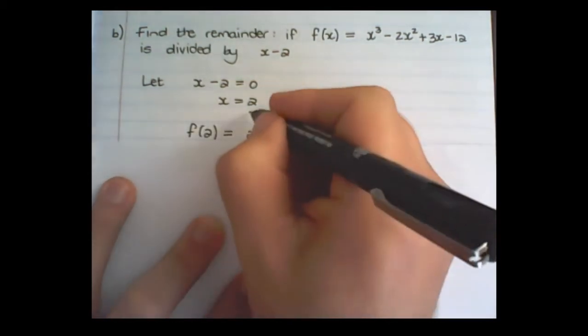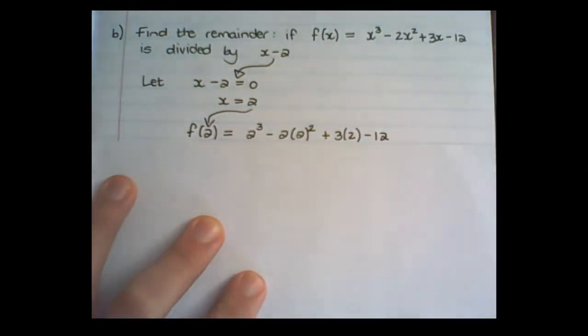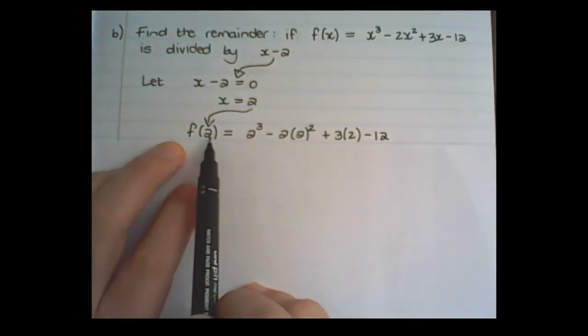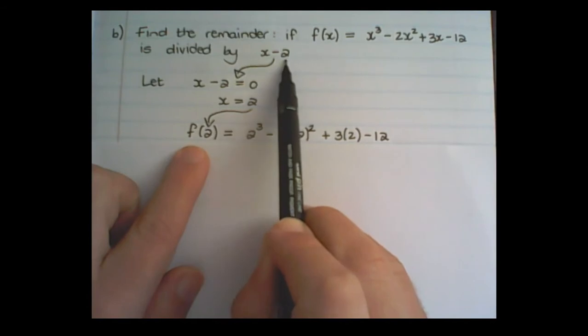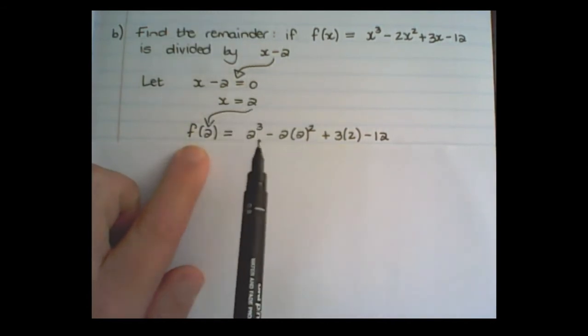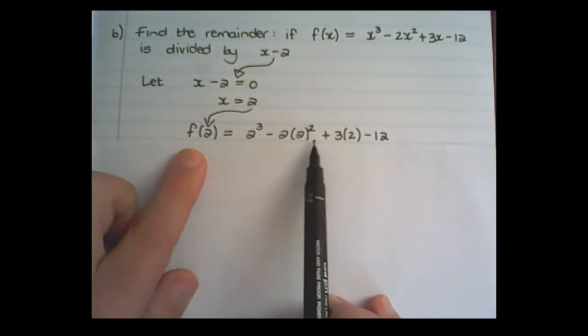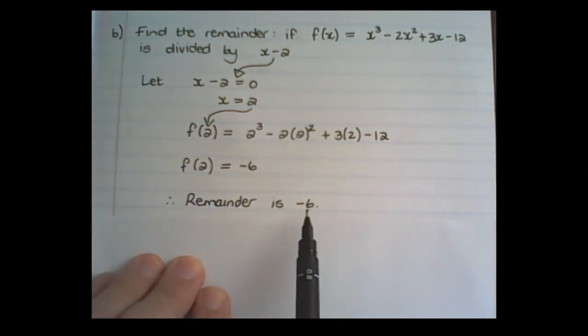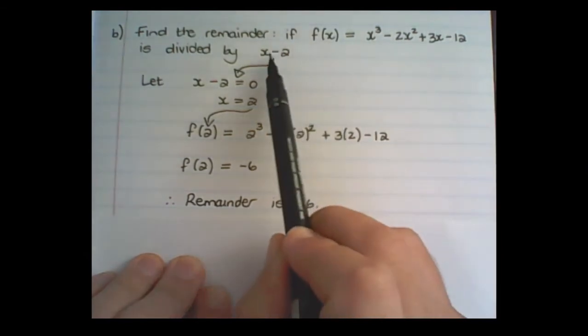Then I substitute that value of 2, which comes from what I'm dividing by, into the expression. Notice I'm not substituting with -2 but with positive 2 because I set this equal to 0. So in the place of x I have positive 2 and simplify. Therefore, the remainder is -6 when I divide this expression by x - 2.